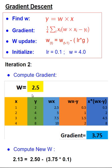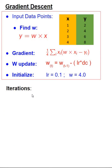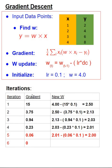As we see, we can continue to run these iterations using steps we have seen earlier. The third iteration has got a gradient of 0.94 with a new w value of 2.03. The fourth iteration has got a gradient of 0.23 with a new w value of 2.01. The fifth iteration has a gradient of 0.06 with a new w value of 2.00.